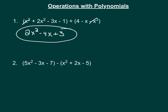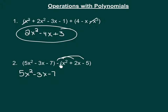In number 2 we're subtracting a trinomial from another trinomial. The first thing we have to do is take this minus sign and distribute it to each term within the second set of parentheses. We bring everything down from the first parentheses, and in the second set, when you distribute a negative, the signs change: negative x squared, then negative 2x, and then positive 5.